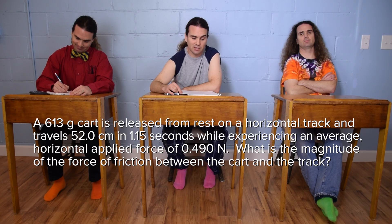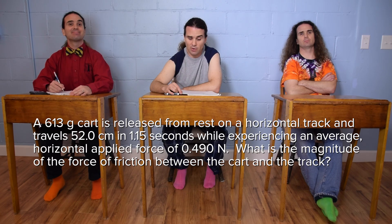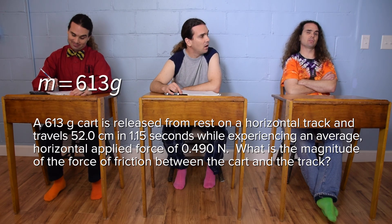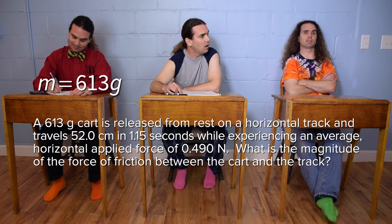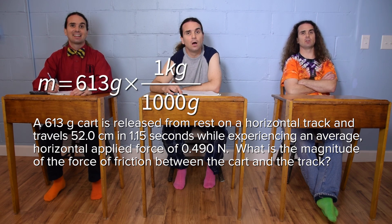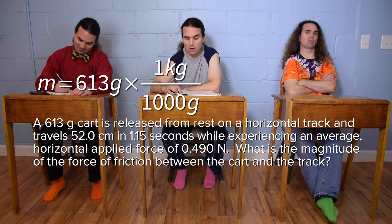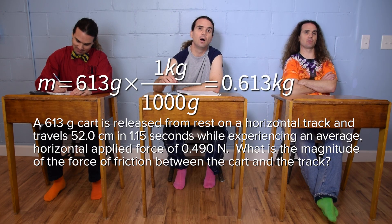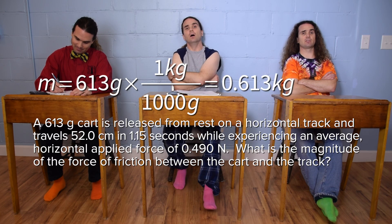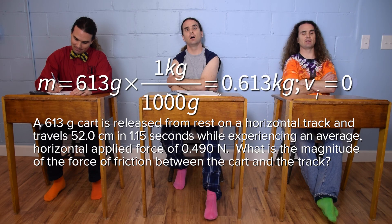Bobby, could you please read the problem again? And Bo, could you please translate? A 613 gram cart is released from rest on a horizontal track and... Stop. Mass equals 613 grams, which we need to convert to kilograms because a newton is a kilogram meter per second squared. So multiply by one kilogram over a thousand grams and get 0.613 kilograms. And it starts out at rest, so the initial velocity equals zero.